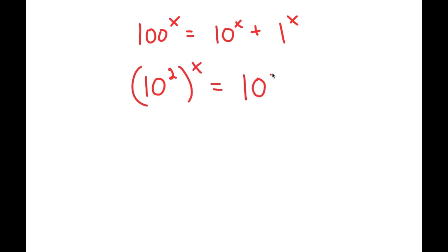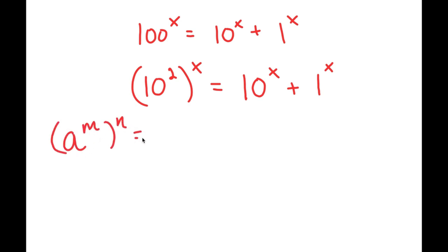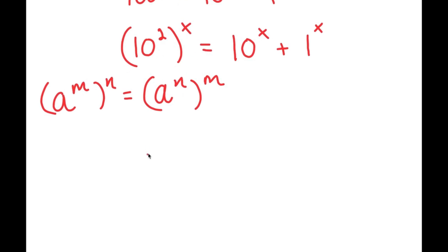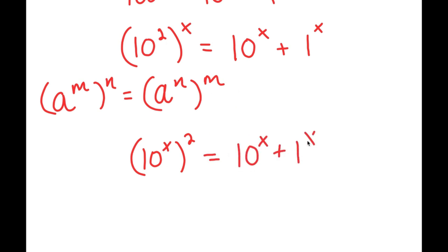So now this is equal to 10 to the power of x plus 1 to the power of x. If I have something in the form a to the power of m to the power of n, this is equal to a to the power of n to the power of m. So 10 to the power of 2 to the power of x equals 10 to the power of x to the power of 2. So now I have 10 to the power of x to the power of 2 is equal to 10 to the power of x plus 1 to the power of x.